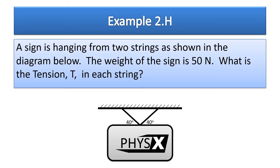Here's one more example — this is kind of an honors example talking about tension. A sign is hanging from two strings as shown in the diagram. The weight of the sign is 50 newtons. What is the tension in each string? Tension is just the force along each string — tension is another name for force when it acts in a string.